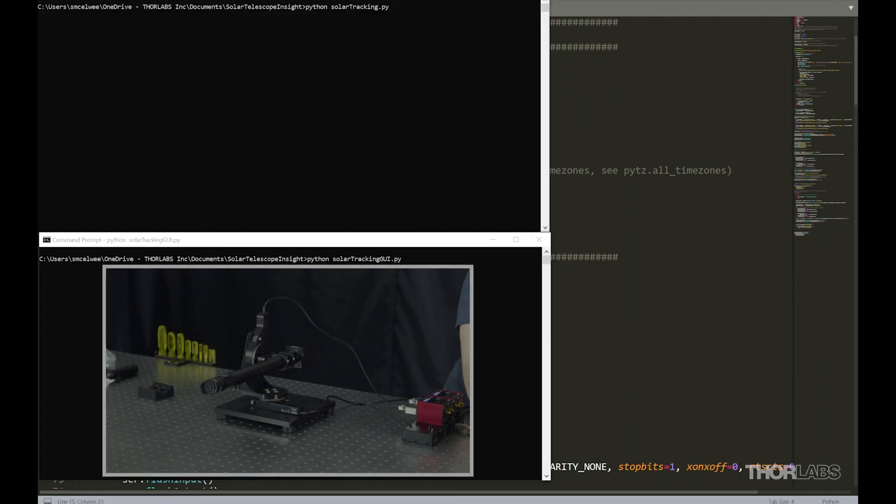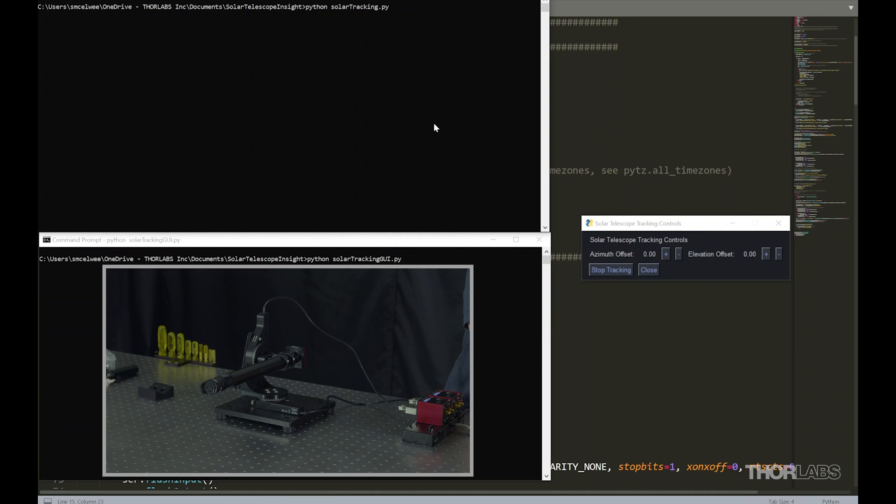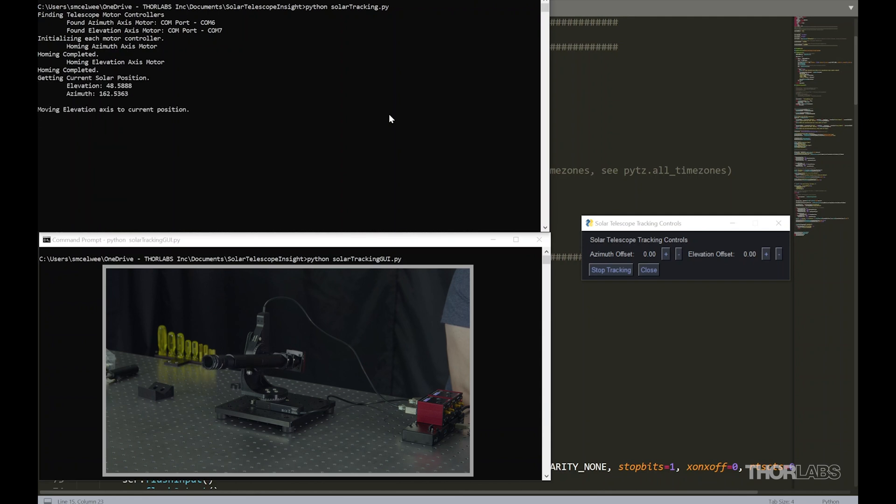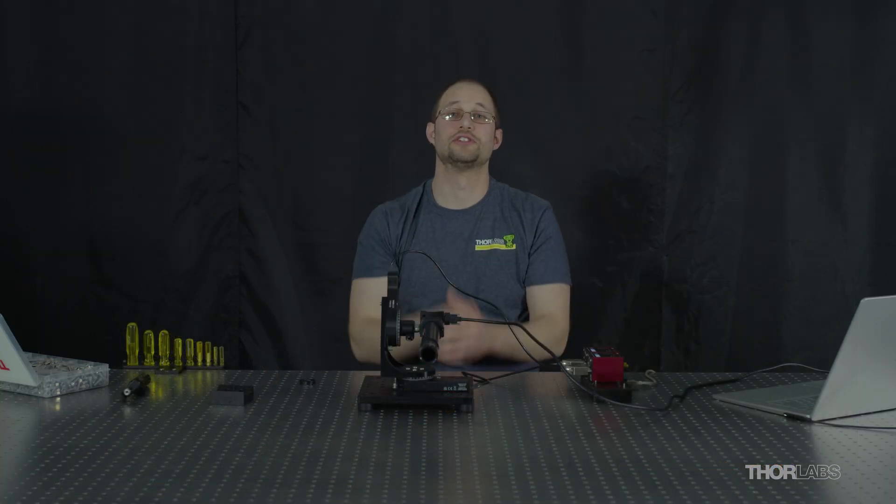I'll first run our GUI script, which allows changing the alignment offsets and to stop the tracking. Next, I'll run the tracking script. The stages start off by homing before they eventually move to the current position of the sun and will be prompted for the user to determine whether they want to start tracking. I'll hit Enter and it starts to track. We can see this works, so now we can head outside.